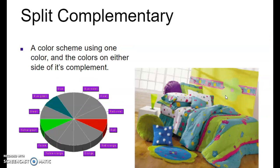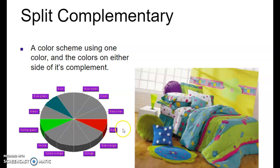Then we have split complementary — a color scheme that uses one color and the colors on either side of its complement. The complement of red is green, but notice that's not shaded in. The colors on either side of green are blue-green and yellow-green. You'll see more pinks in this bedspread — remember, pink is a tint of red, a brighter intensity tint of red.